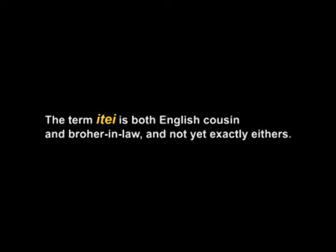It may not be translated simply by the common English kinship terms. For instance, among the Meitei of India, the term 'itai' covers both English 'cousin' and 'brother-in-law,' and yet is not exactly either. It requires a dialect of English specifically constructed to specify the semantic scope of that category, using terms that stay within its bounds and do not overlap them.